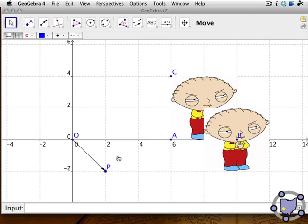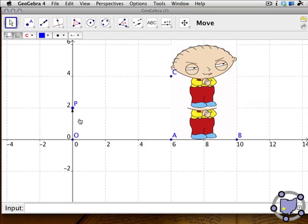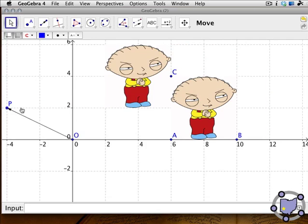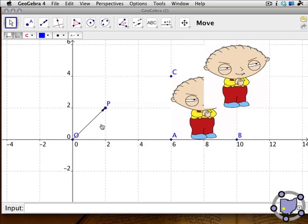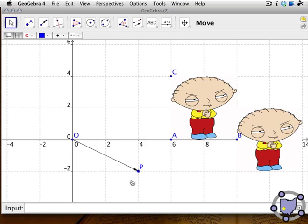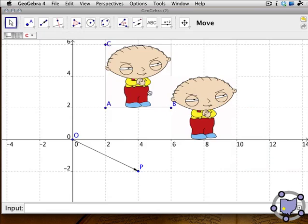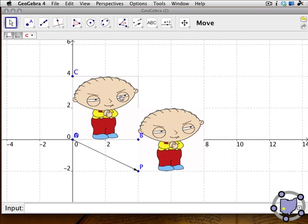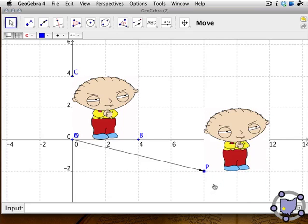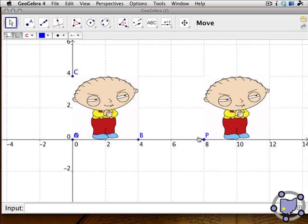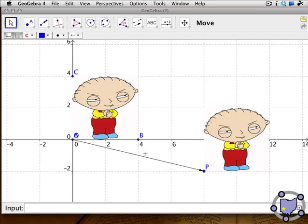You can drag on this vector. Notice that when you do that, the image of Stewie, its location changes. Now clicking on this pre-image is kind of interesting. If we put Stewie over here, you'd notice that the vector changes the position of Stewie as you would expect.